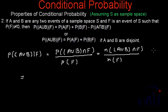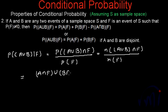Using the distributive law of set theory, (A∪B)∩F can actually be written as (A∩F)∪(B∩F). The number of elements in (A∪B)∩F equals the number of elements in (A∩F)∪(B∩F), divided by the number of elements in F.